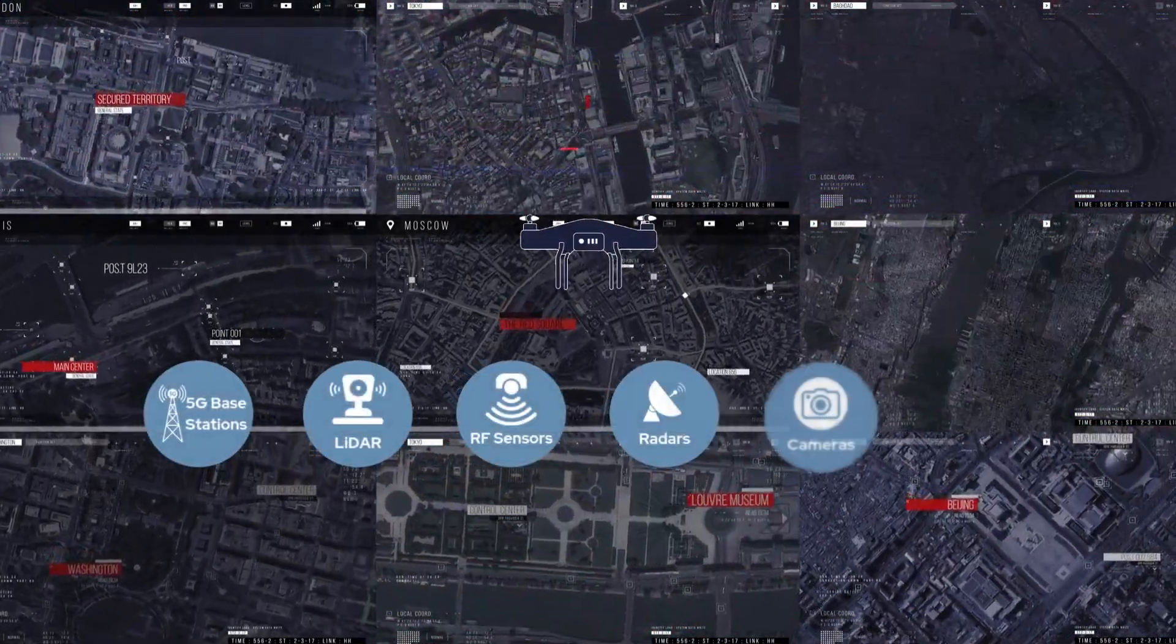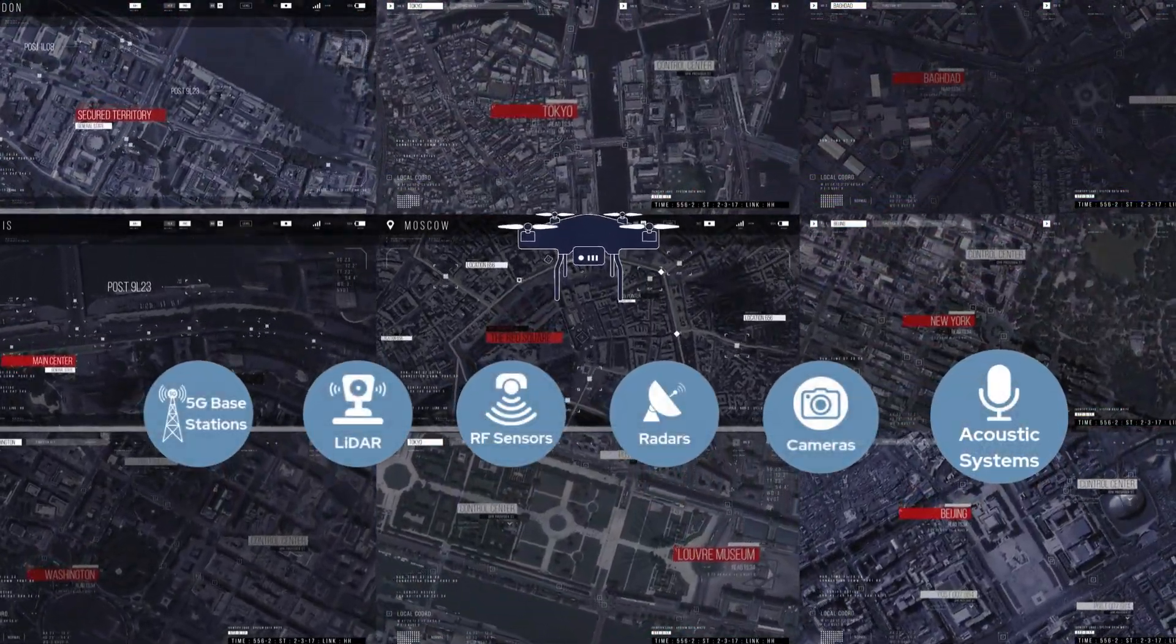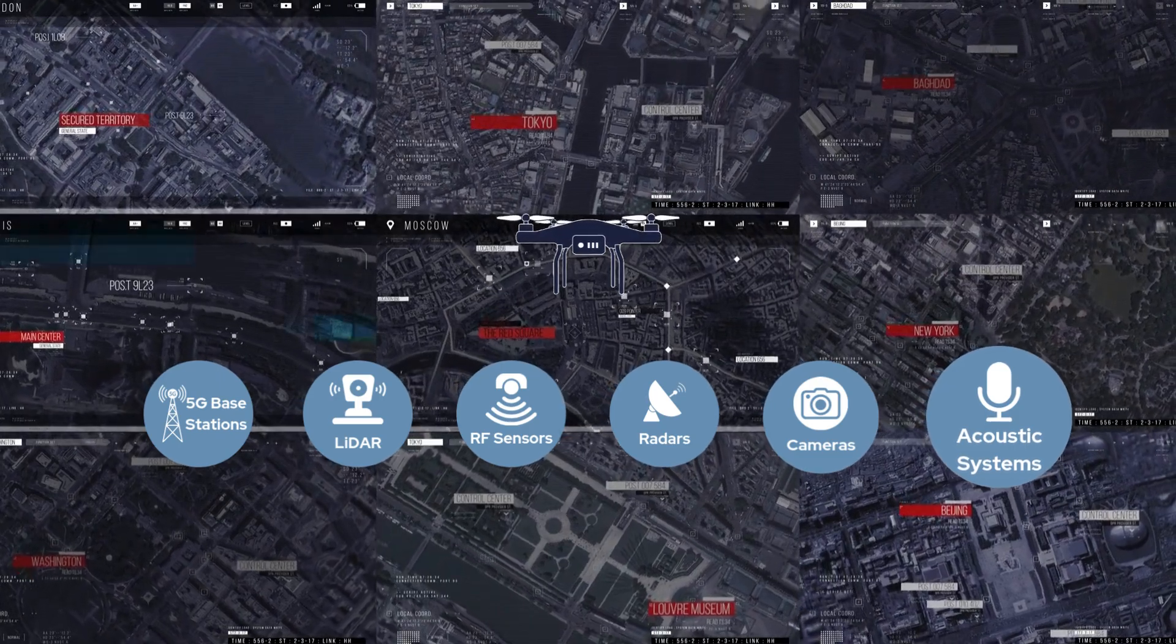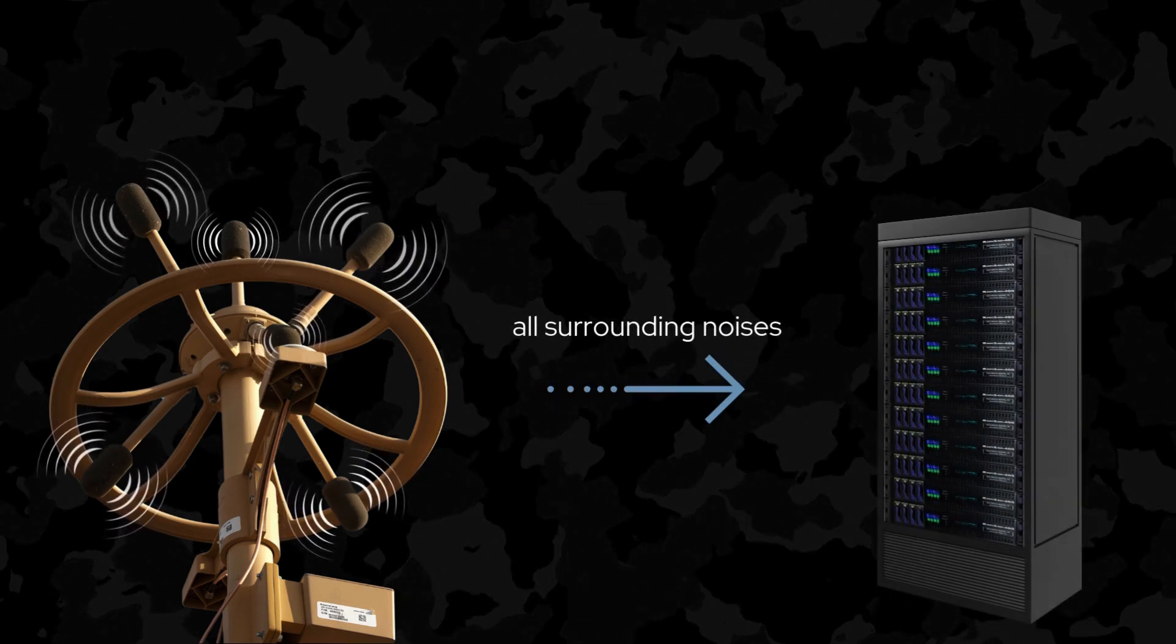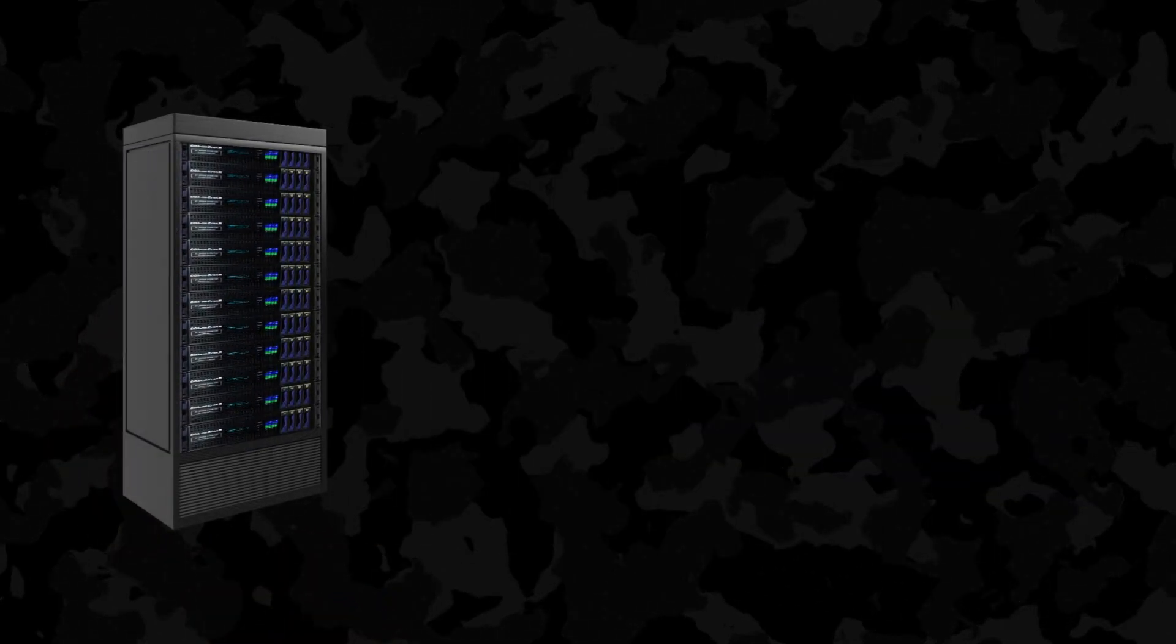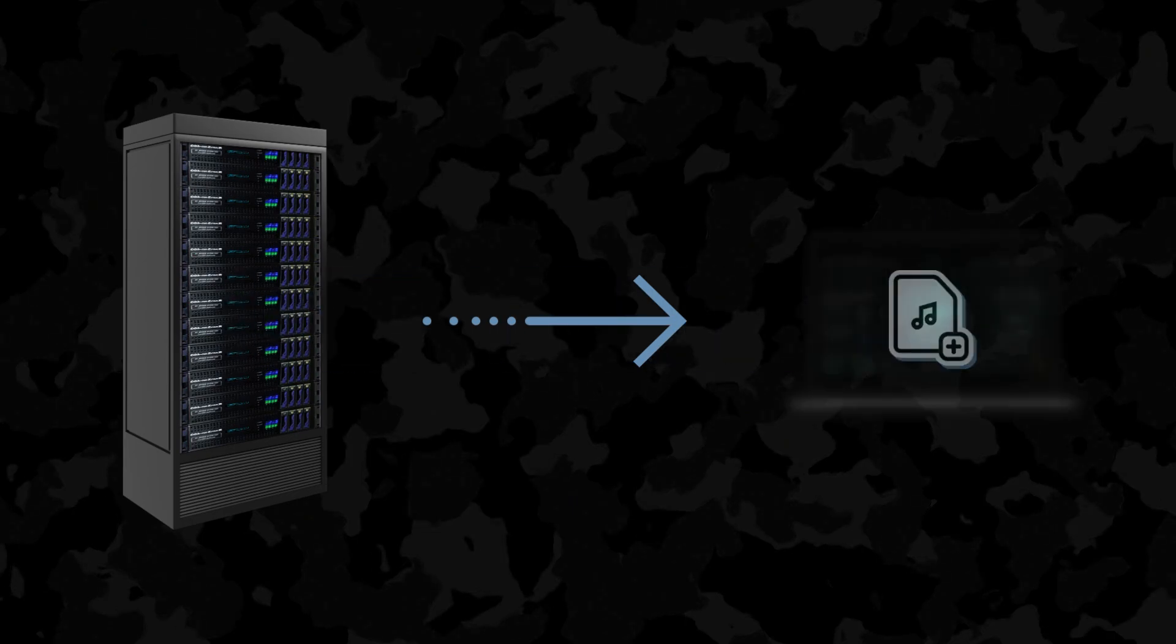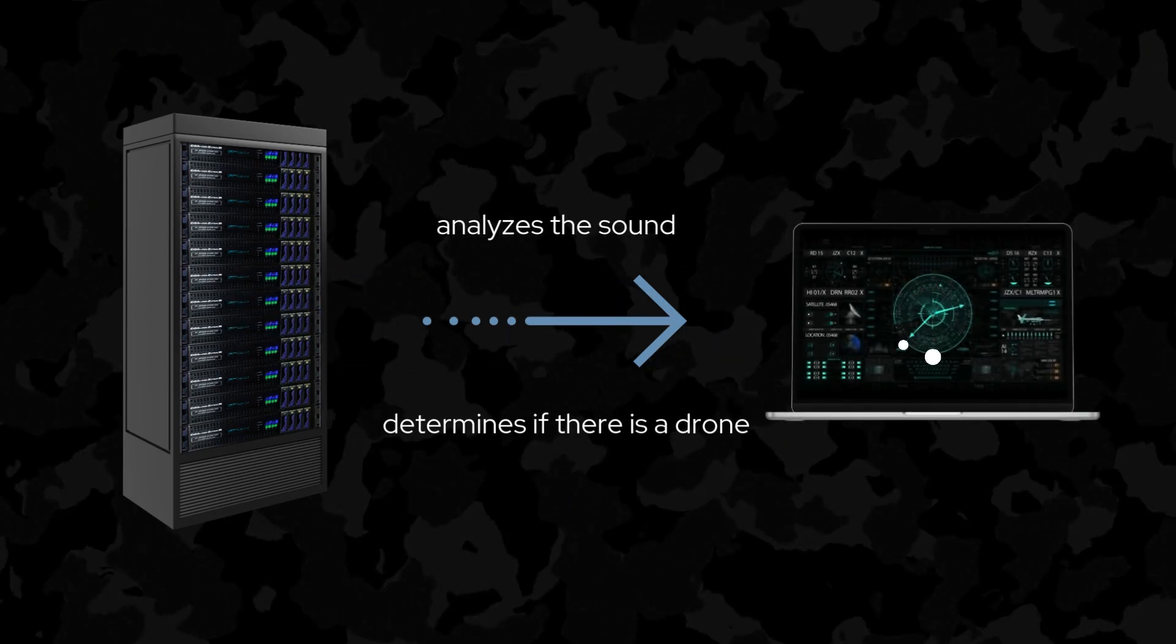Acoustic detection is a crucial component of air defense, helping identify drones based on the unique sounds they emit during flight. The system uses slightly modified microphones, which capture and send all surrounding noises to a server. Specialized software then analyzes the sound to determine if there is a drone or other aerial target nearby.